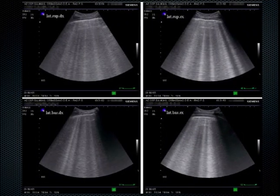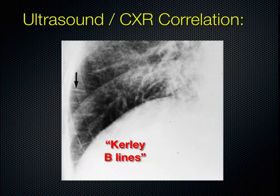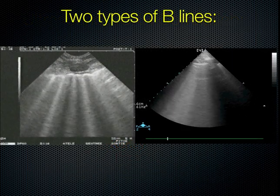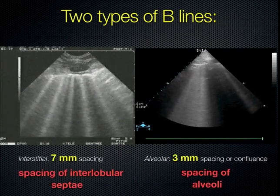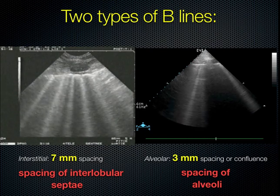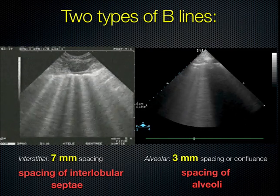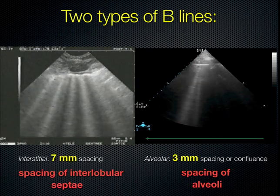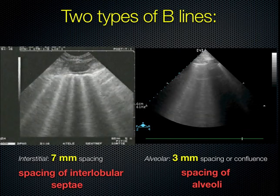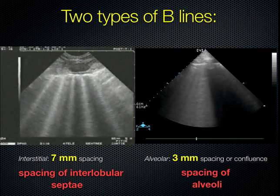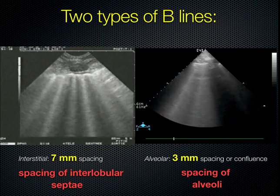What happens is fluid trapped in these interlobular areas causes ultrasound waves to get trapped and reverberations are set up. B lines are essentially the ultrasound equivalent of radiological Kerley B lines, which come up to the surface perpendicularly. There are two types: spaced approximately seven millimeters apart from the pleural line — corresponding to interstitial fluid — and three millimeters apart, corresponding to fluid trapped in the alveoli. The three-millimeter spacing or confluent B lines is the ultrasound equivalent of the CT finding of ground glass.